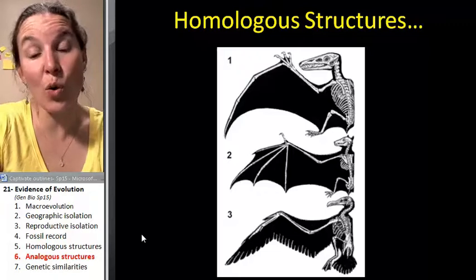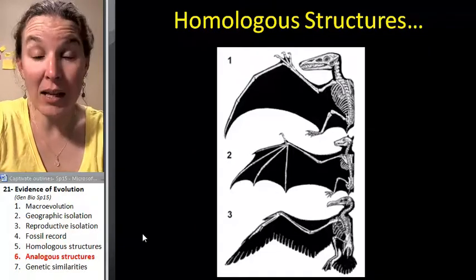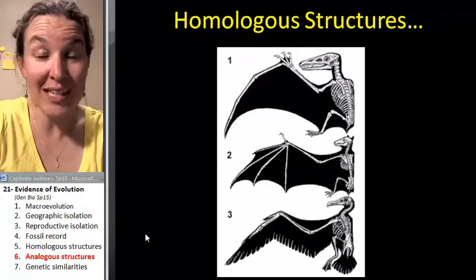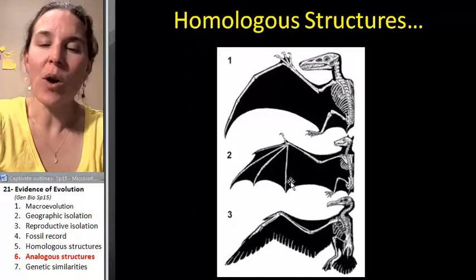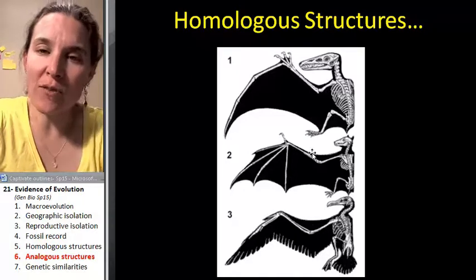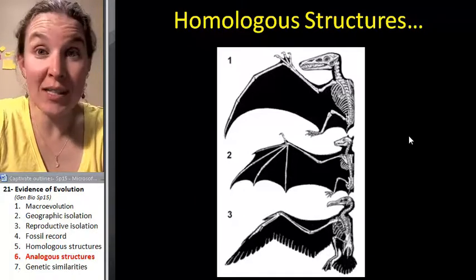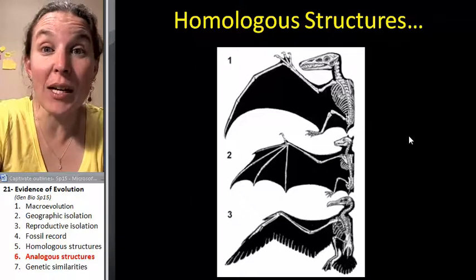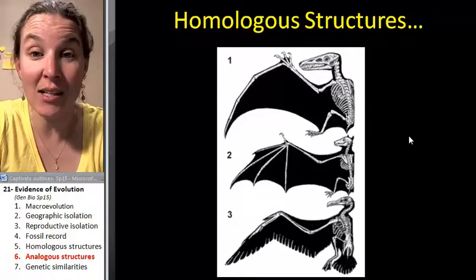We're cool with the idea that homologous structures indicate relatedness. I've got another visual here because this is going to help us see and distinguish between homologous structures and analogous structures.